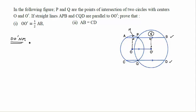So now, if OO'NM is a rectangle, then this implies that OO' should be equal to MN because these are the opposite sides of a rectangle. Now MN can be further written as MP plus PN. But since we have already seen that M is the midpoint of AP, I can write MP as half of AP. And also since N is the midpoint of PB, I can write PN as half of PB.